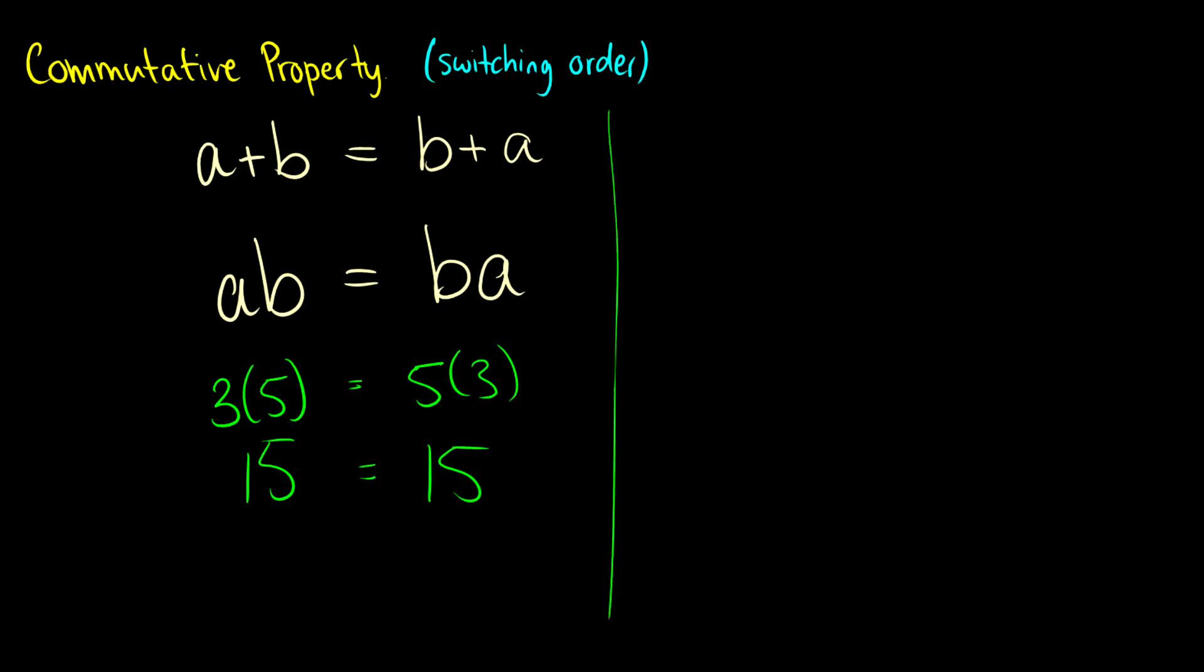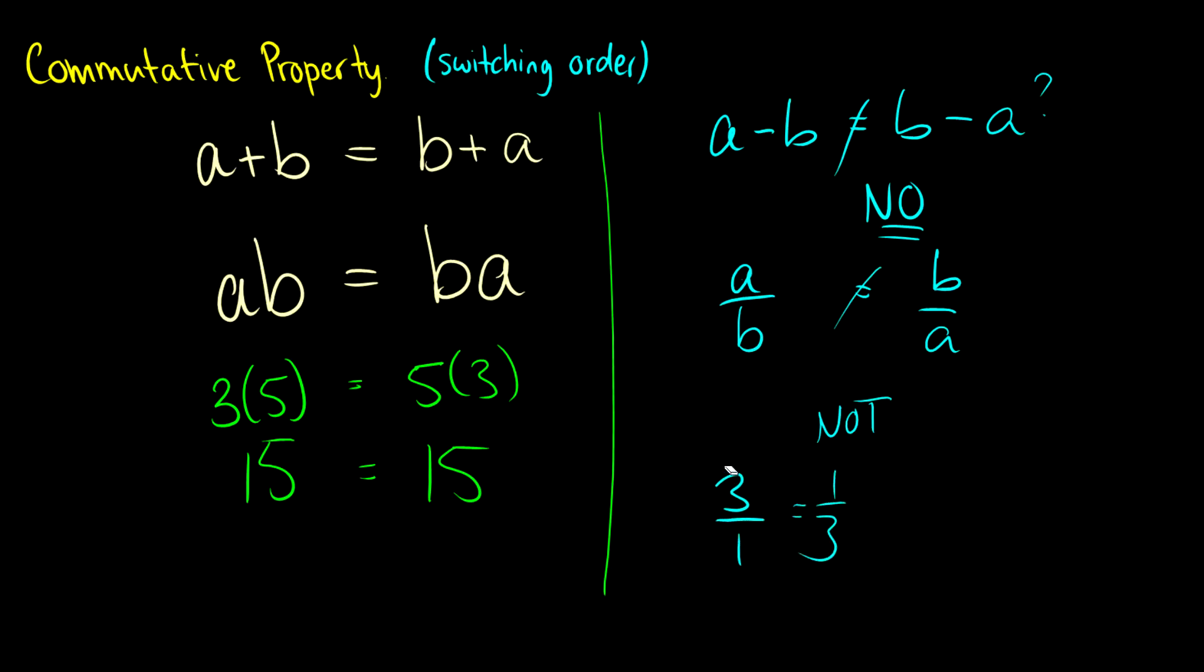But here's a question. We know we can do it for addition and multiplication. But what about subtraction? Is a minus b the same thing as b minus a? And the answer here is no, it's not, which we'll see next video with negative numbers, how they work. And is a divided by b the same thing as b divided by a? And of course not. Because then we could say that three is equal to one third. And that would just be crazy. So no, it only works for addition and multiplication. So that's the commutative property where we just switch the order around.